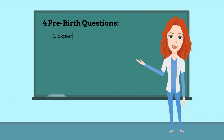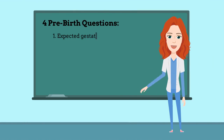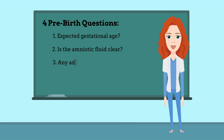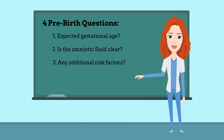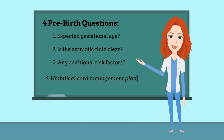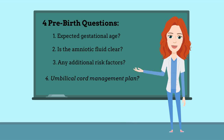Remember to ask the four pre-birth questions: What is the expected gestational age? Is the amniotic fluid clear? Are there any additional risk factors? And what is the umbilical cord management plan at this birth?